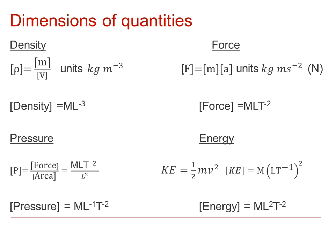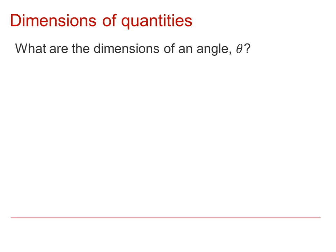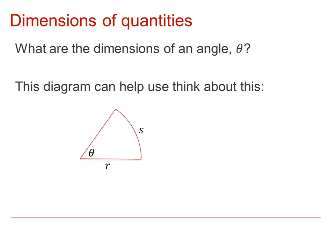One or two quantities you may not have thought about: angle θ. One thing we can consider is how we define a radian. A radian is defined as the arc length divided by the radius. We can see we've got two lengths, one divided by the other.